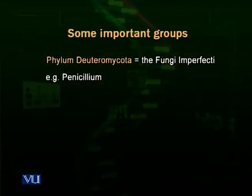Then comes another group, the phylum Deuteromycota, also called the fungi imperfecti. These fungi have certain characteristics that differ from other fungi, which is why they are called imperfecti. Penicillium is one of the most important fungi in this group. Scientists derived penicillin from Penicillium, and penicillin was the drug that saved hundreds of thousands of lives during World War II when it was discovered. Before that, people died from wound infections, and penicillin was crucial in treating those infections. So fungi are also a source of very important medicines.